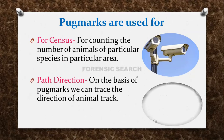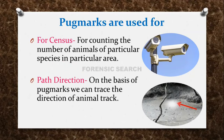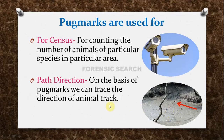The next use is for path direction — that means on the basis of Pugmarks, we can trace the direction of an animal's track. We can find out where the animal came from and where it went. So on the basis of Pugmarks, we can identify the direction of an animal's track.